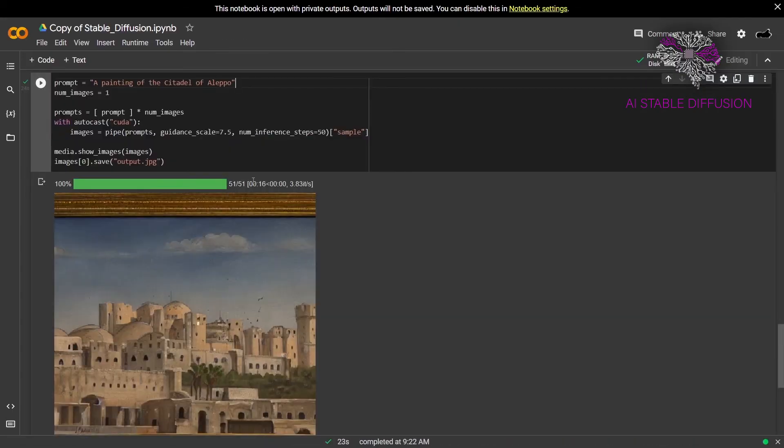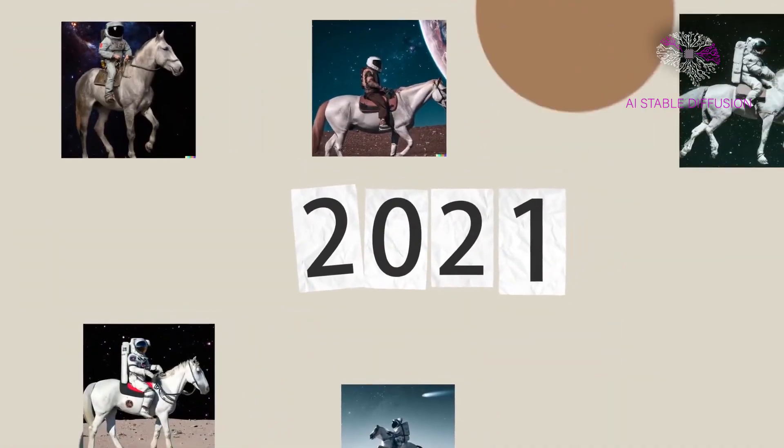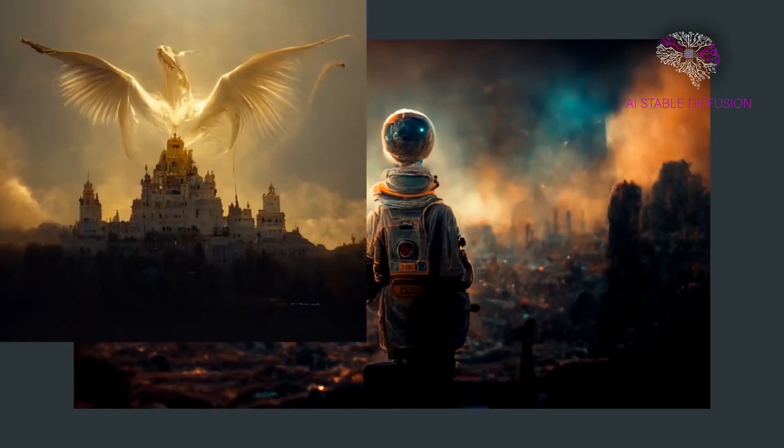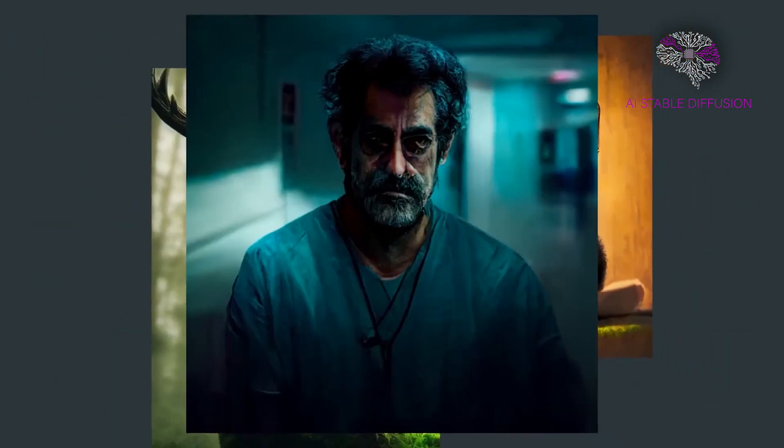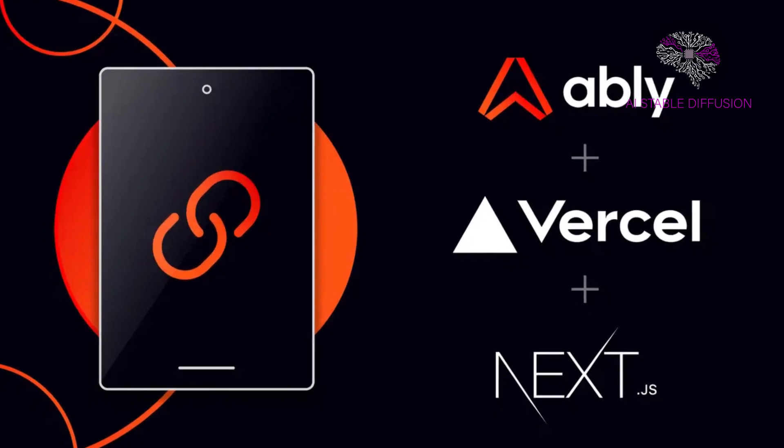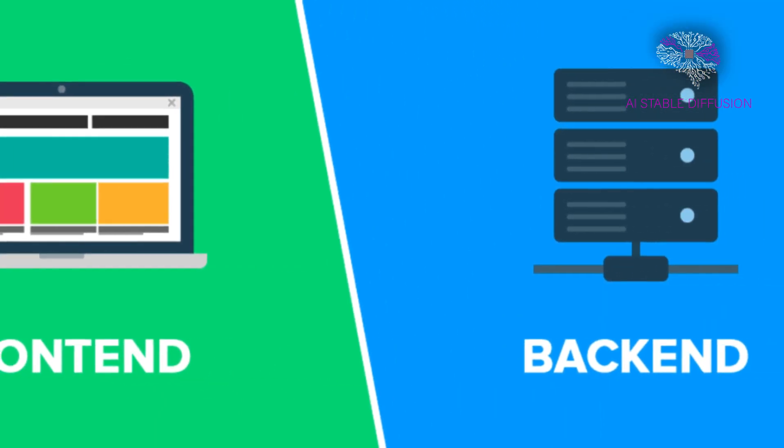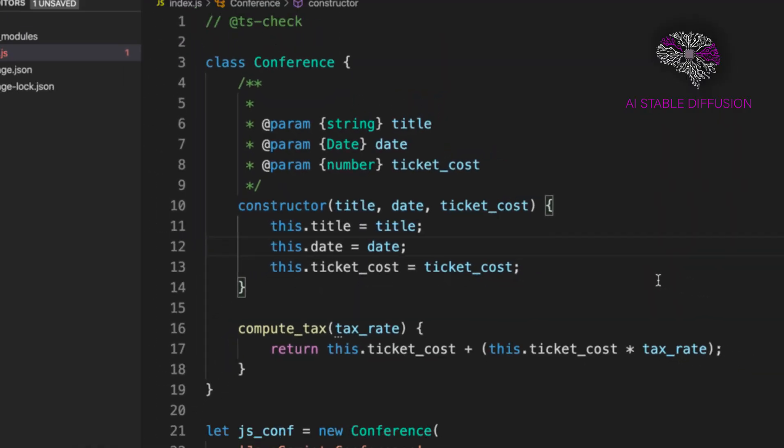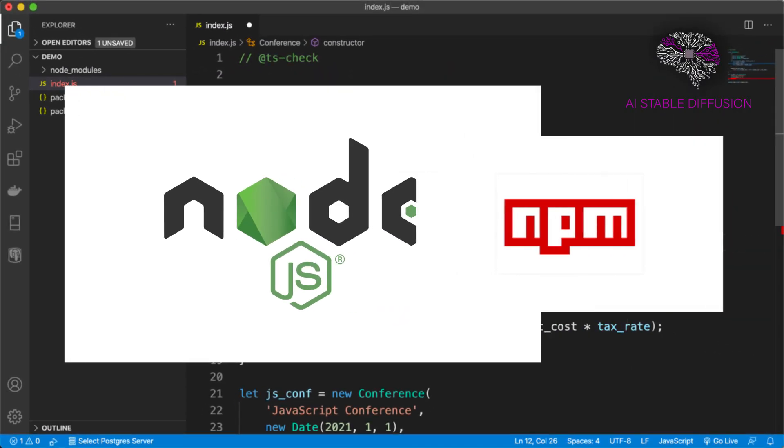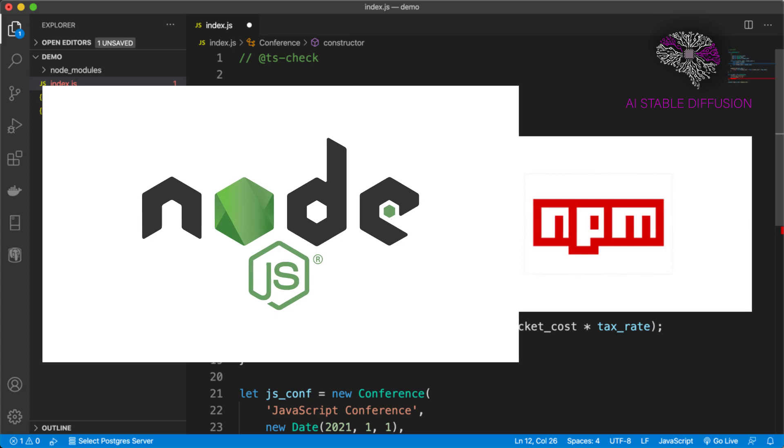First, we'll create a web application that lets users enter text prompts using Stable Diffusion to create images based on those prompts. This web application will be built on Vercel and use Next.js for the front-end and the back-end. Before we start, make sure Node.js and npm are installed on your device or computer.